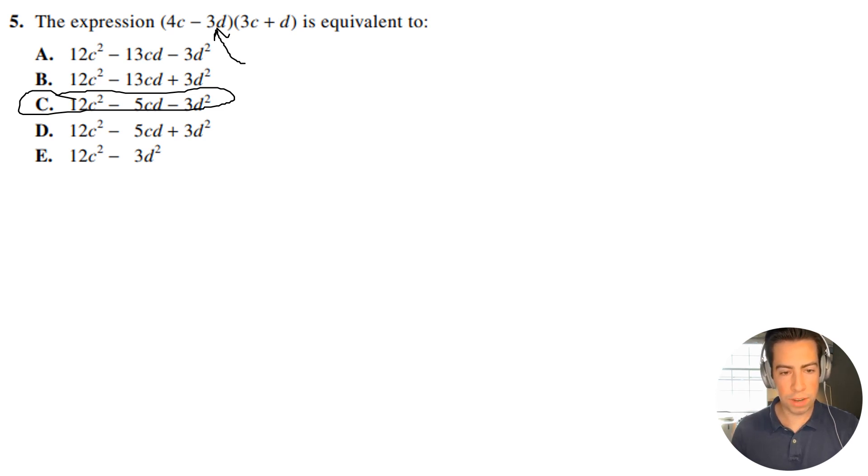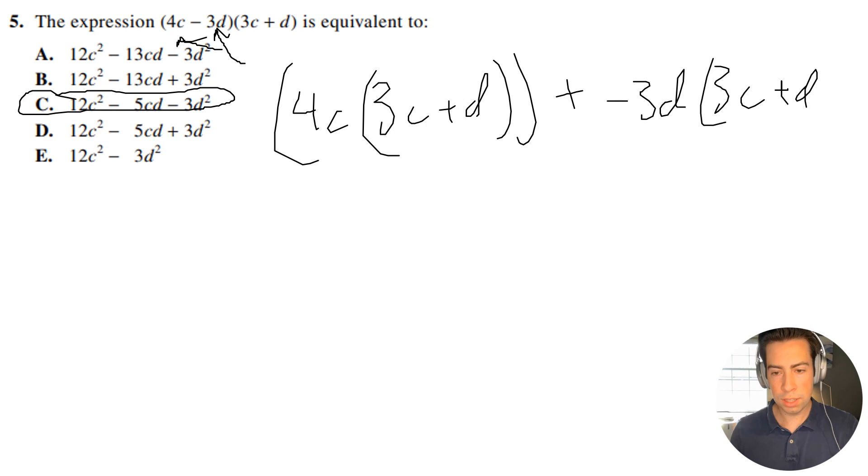Basically, you're going to take this term and divide it into two chunks. So we're going to do 4c multiplied by 3c plus d, and then we're going to add this entire thing to negative 3d times 3c plus d, just like that, and what we're going to get is the same thing. So it'll be 12c squared plus 4cd minus 9cd minus 3d squared.